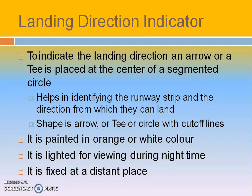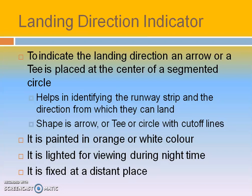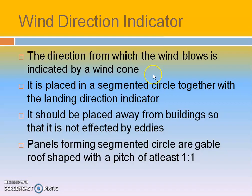Coming to the direction indicator: a T-shaped arrow is placed at the center of the segmented circle. This indicates how the wind is happening and in which direction — whether crosswind, downwind, or headwind — and whether the wind is supporting or not. It is painted in orange or white color and is lighted during the night time so it can be easily seen. This is the segmented circle, and at the center the wind direction indicator is there.